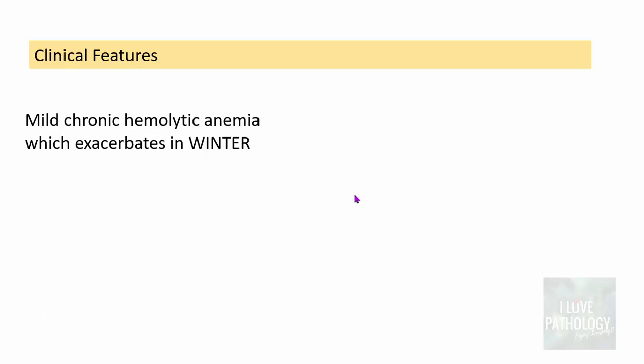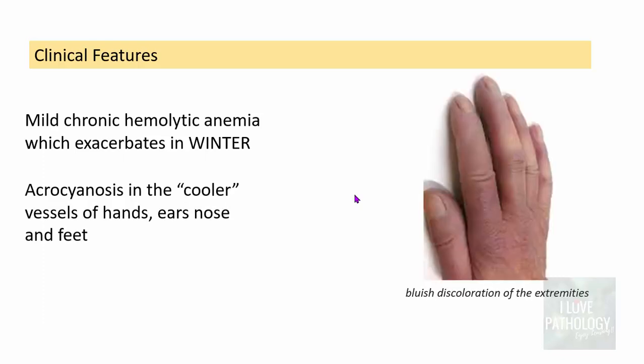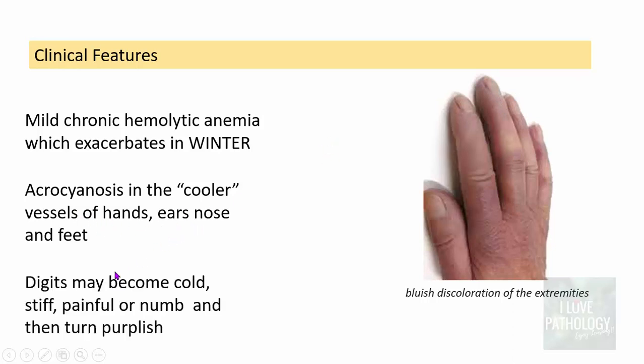Clinical features of cold antibody type hemolytic anemia include mild chronic hemolytic anemia that exacerbates in winter. Patients develop acrocyanosis — bluish discoloration of the extremities, seen in the cooler vessels of the hands, ears, nose, and feet. The digits may become cold, stiff, painful, or numb, and turn purplish.